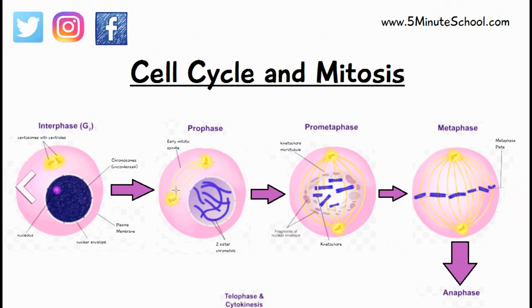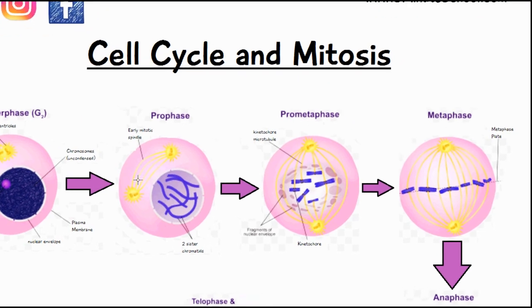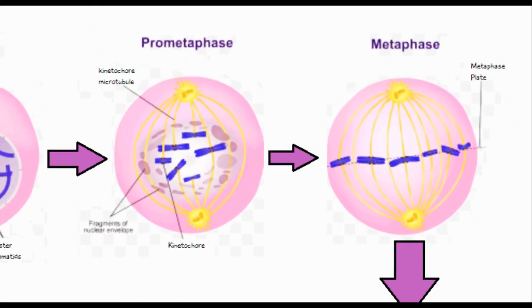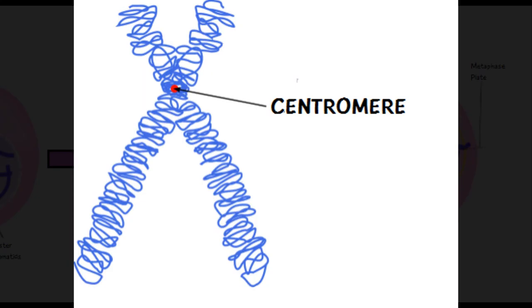The next stage is called prometaphase. What happens here is the nuclear envelope, or nuclear membrane, breaks down, and these chromosomes get attached to the microtubules that were forming from the middle point. They attach via the middle of the chromosome at a structure called a centromere, and this is what happens in prometaphase.